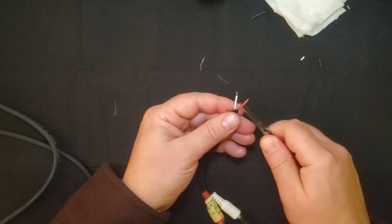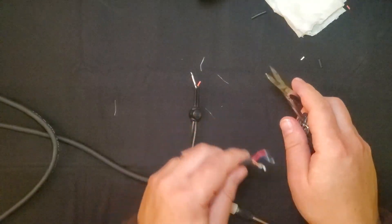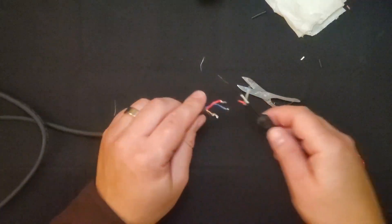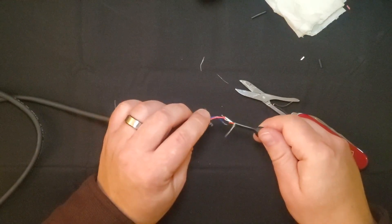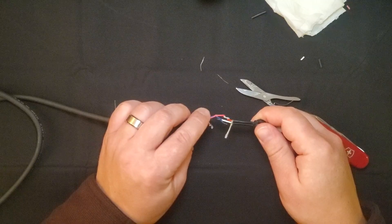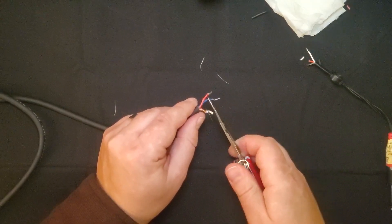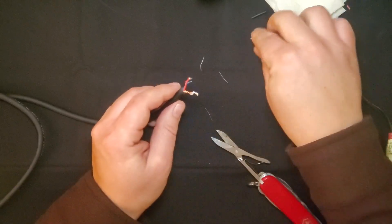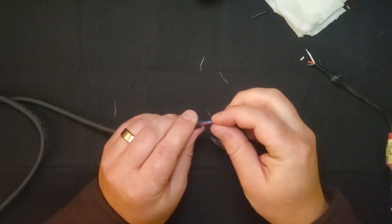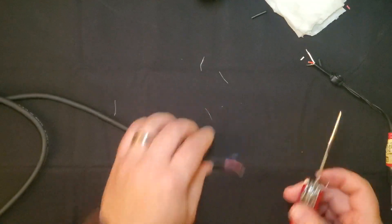I'm cutting the red wire so that I stagger where the connections happen. If I left all of them the same length then there's a chance that the conductive parts, the exposed bits, are going to touch when I bind all this up in electrical tape at the end. So by staggering these connections I know that nothing is going to connect that shouldn't connect, so I'm going to have a clean audio signal.